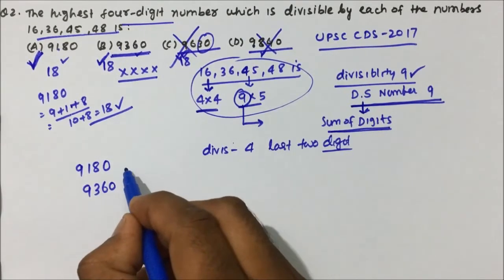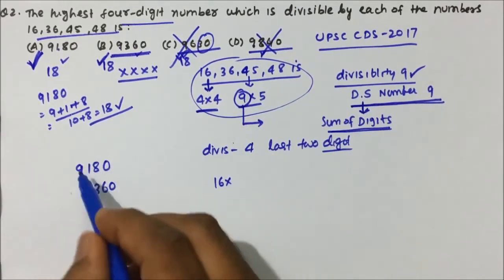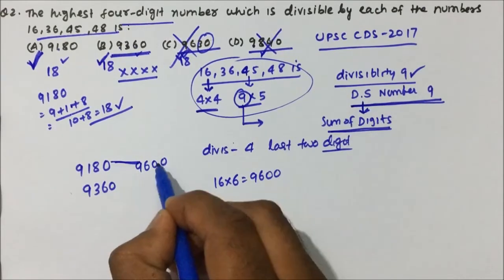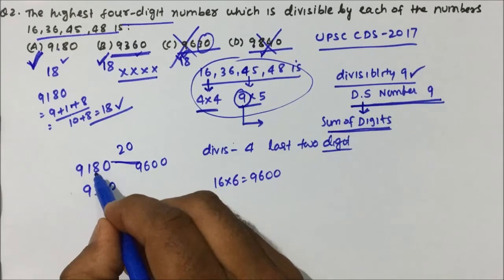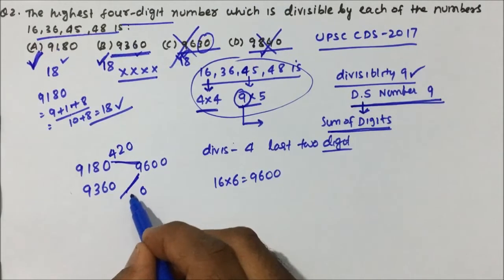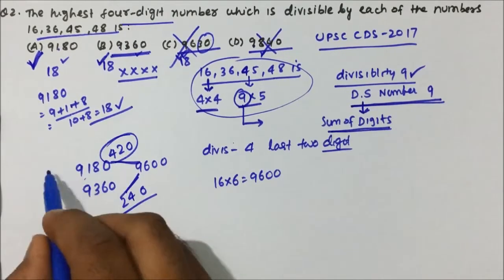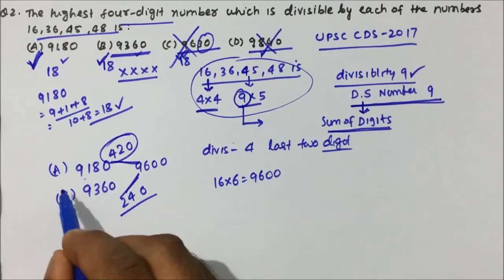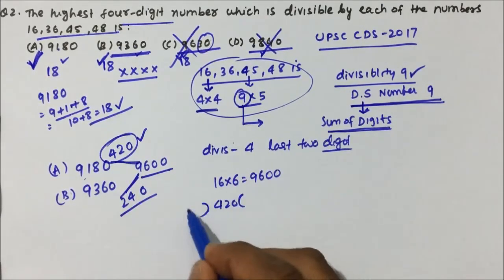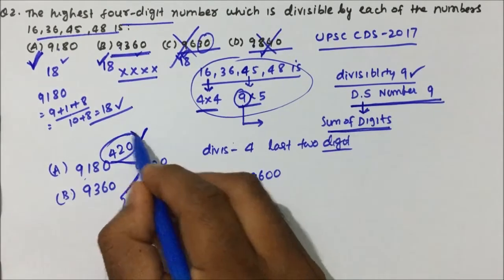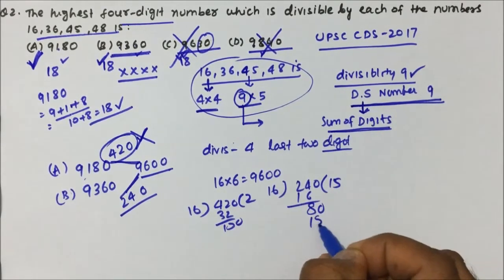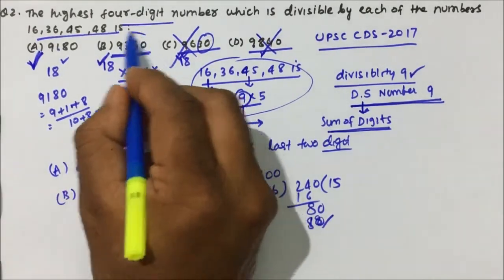Now I have two options remaining: 9180 and 9360. The maximum multiple of 16 near 9600 is 9600 itself. Option A (9180) is 420 less than 9600, and option B (9360) is 240 less than 9600. Now check: is 420 divisible by 16? 16 into 2 is 32 — 420 is not divisible by 16. Is 240 divisible by 16? 16 into 5 is 80, and 16 into 15 is 240 — yes, 240 is divisible by 16. So our answer is option B.